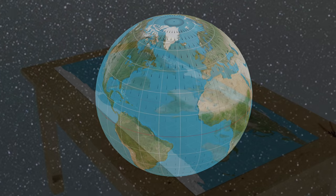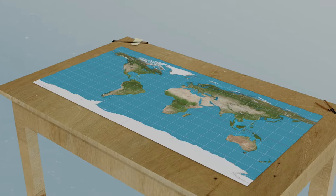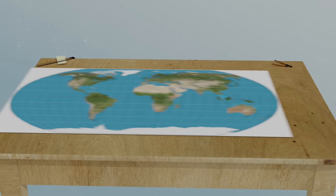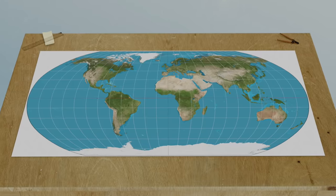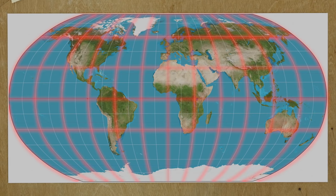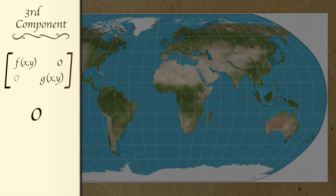Now, rather than an equirectangular projection, if you instead started with a projection like the Robinson one, where the lines of latitude and longitude didn't intersect at right angles, you would end up with the third component in your metric tensor being non-zero.